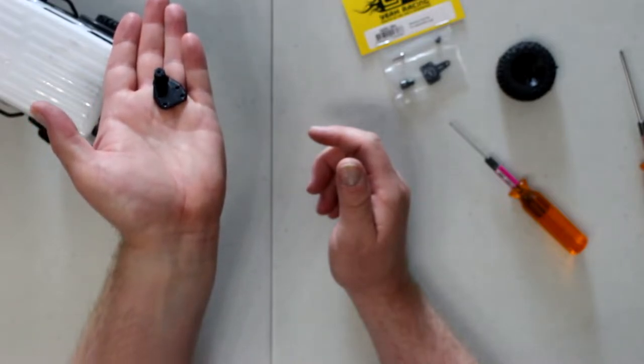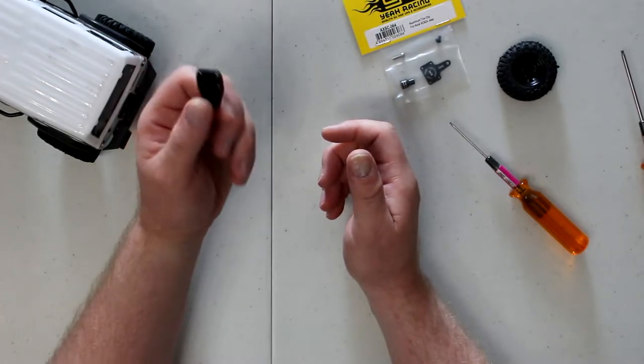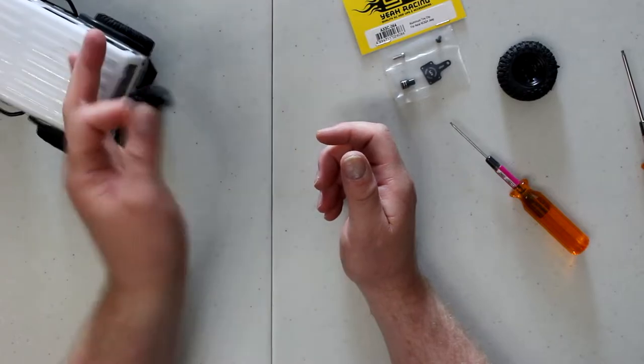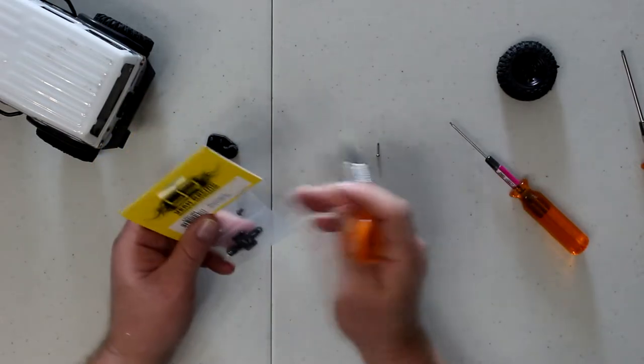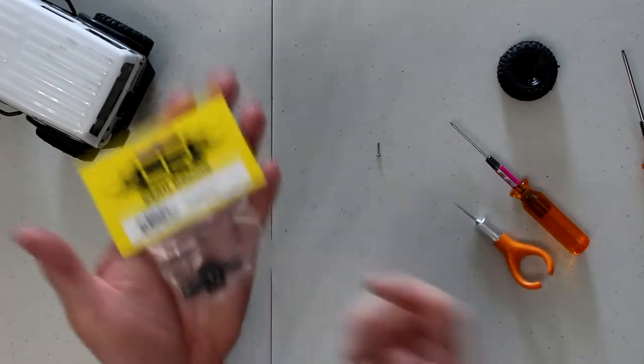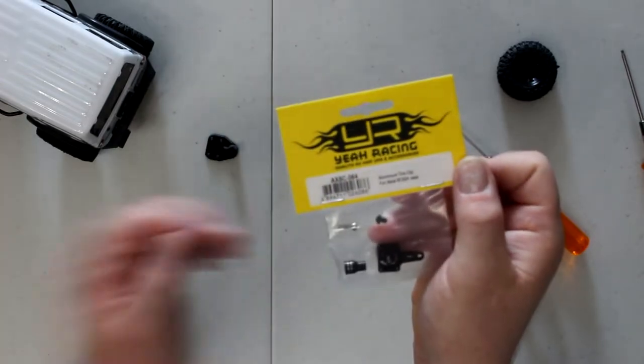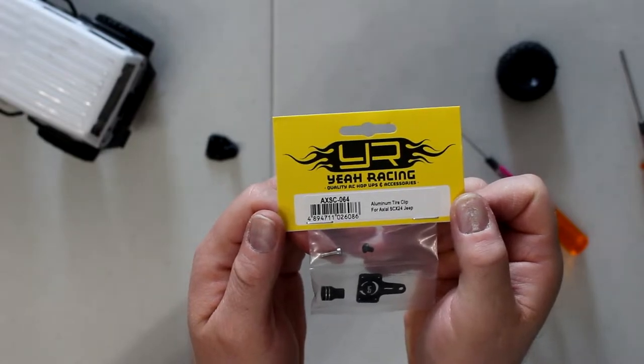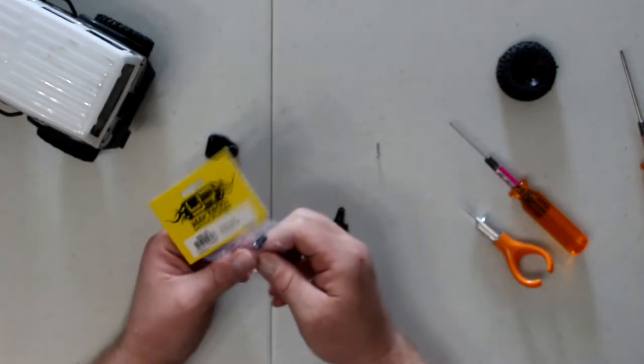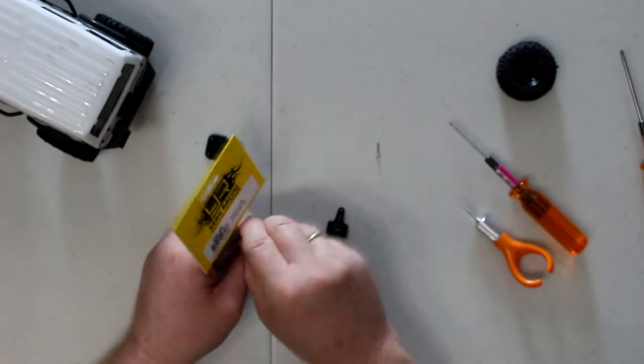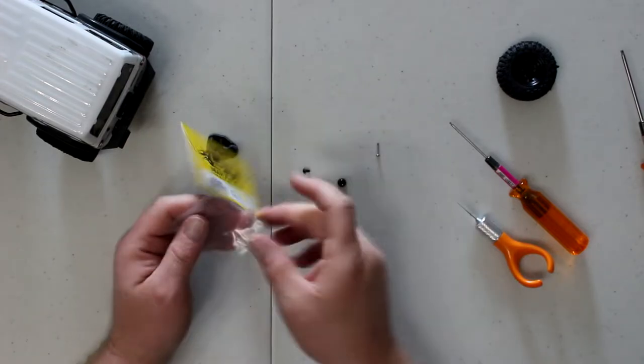Now we do have our 3D printed mount here. If you're wondering where to get this, you can get it on Thingiverse, they do have a lot of stuff for this vehicle. But let's open this guy here. Let's see if it's gonna want to focus here, there we go.